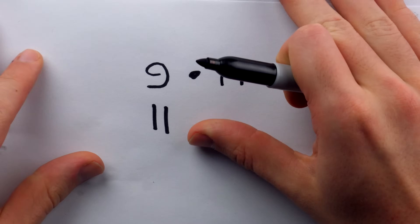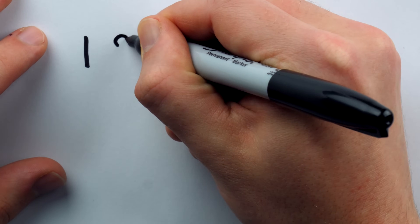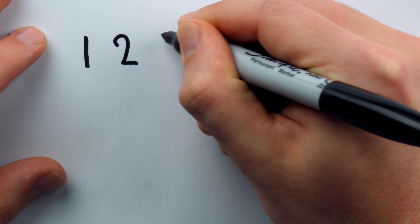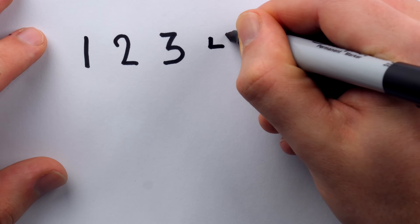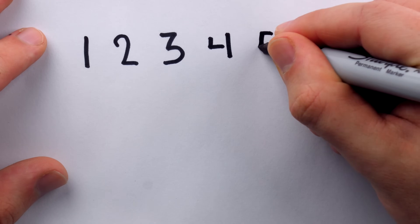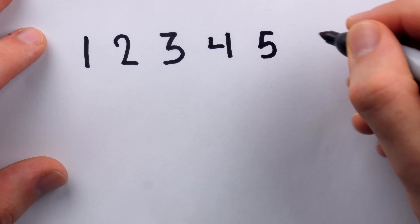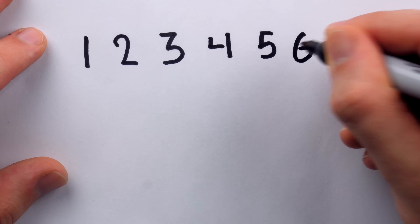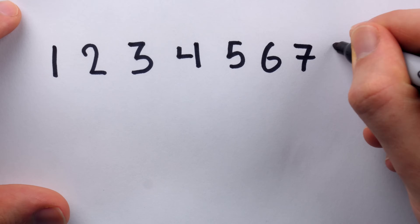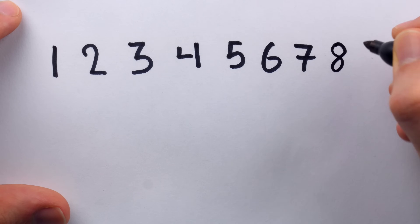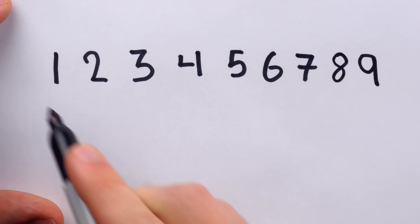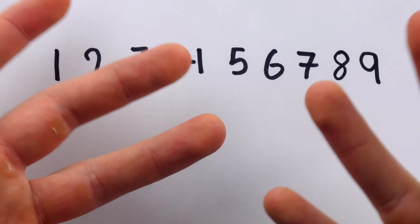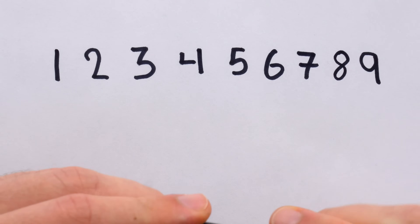Perhaps I should use some numbers you actually know — the beloved Hindu-Arabic numerals. These modern numerals that we use today were invented between the 1st and 4th centuries by Indian mathematicians. Although it wouldn't be until the 1400s that the numerals really began to take shape in the way that we're familiar with them today.